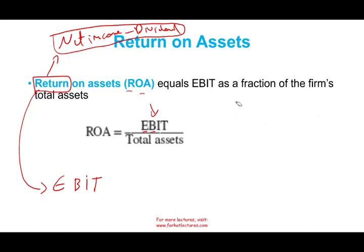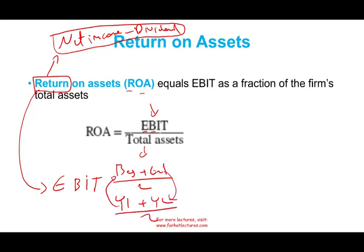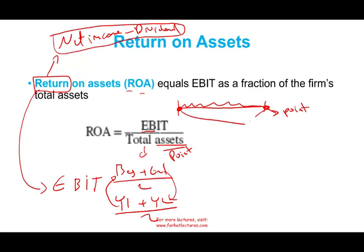In the denominator, we use average asset — beginning plus ending asset divided by two, or year one plus year two divided by two. We use the average because earnings, your income, is for a period of time, while your assets are for a point in time on the balance sheet. You cannot take all this performance and compare it to a point in time. So you take beginning assets plus ending assets and average them, comparing earnings to the average asset.